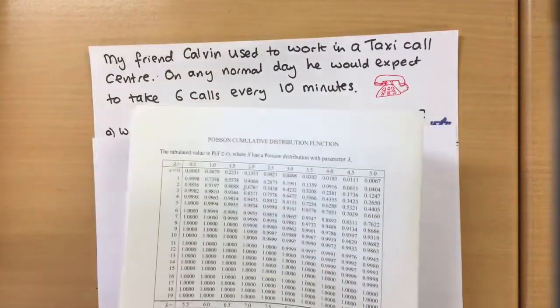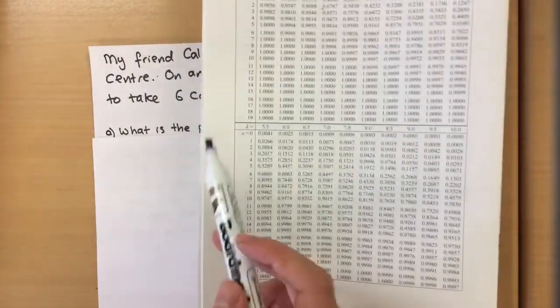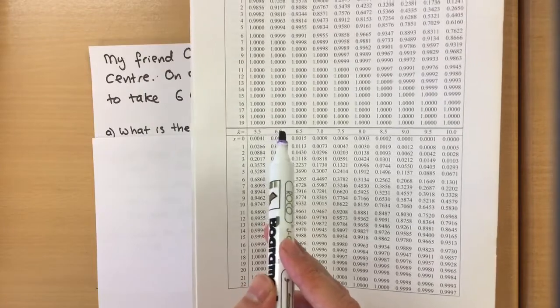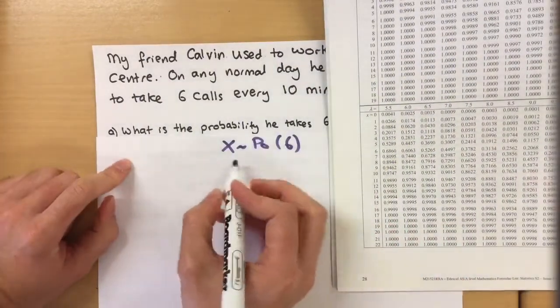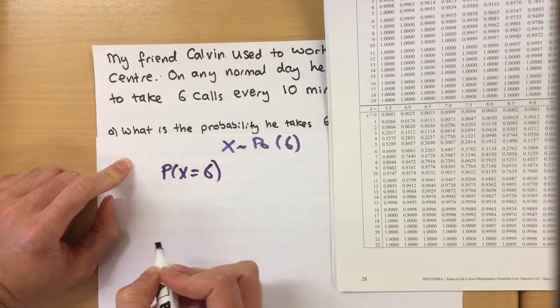We always state it first is Poisson with a mean of six calls and the best part is this is in our table. So in your Poisson tables, six is a mean lambda of six and what's the chance we get exactly six calls?